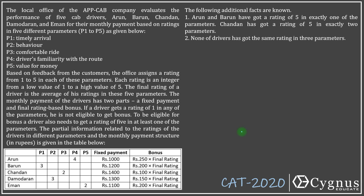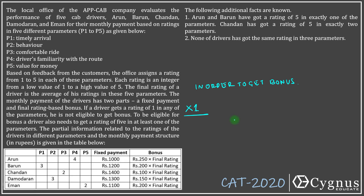The monthly payment of the drivers has two parts: a fixed payment and a final rating-based bonus. If a driver gets a rating of 1 in any of the parameters, he is not eligible to get a bonus. So the driver should not get a 1 in any parameter in order to get the bonus. Also, to be eligible for bonus, a driver needs to get a rating of 5 in at least one of the parameters.